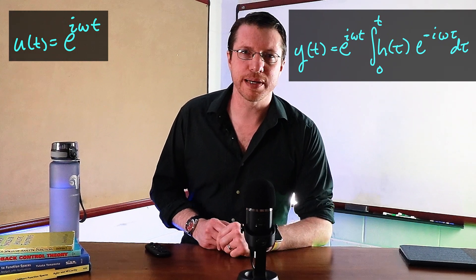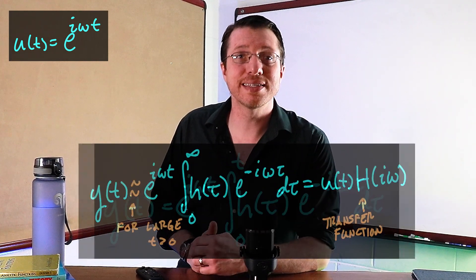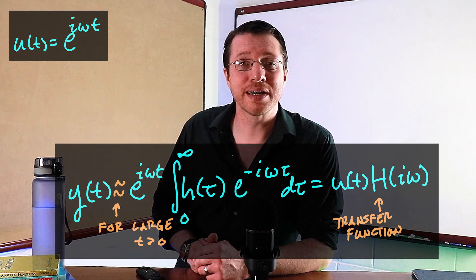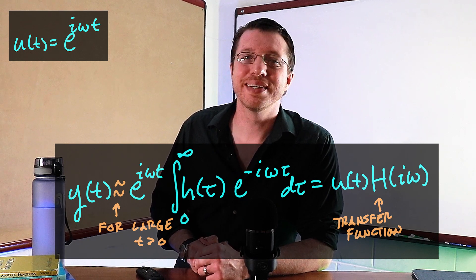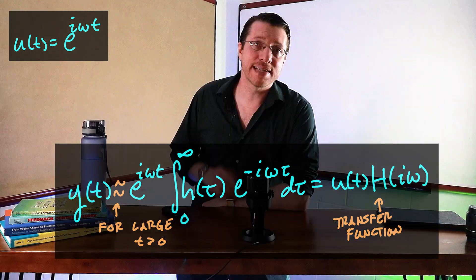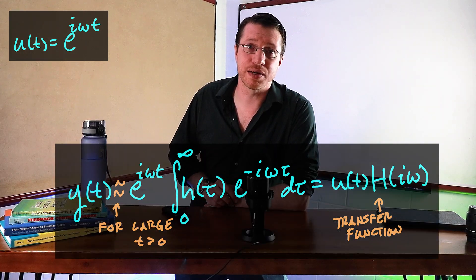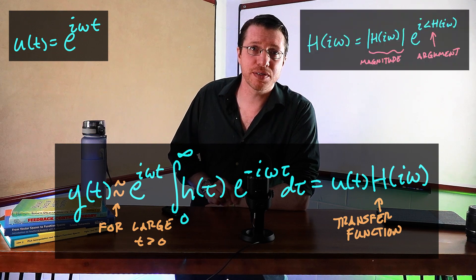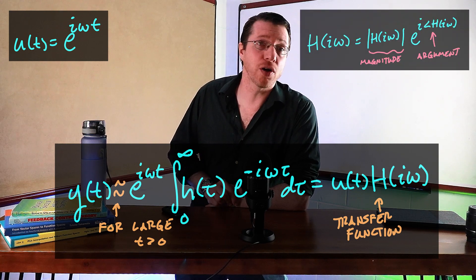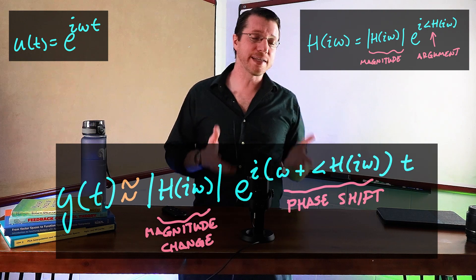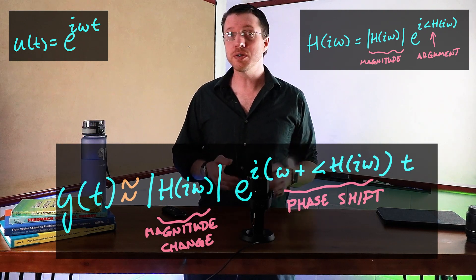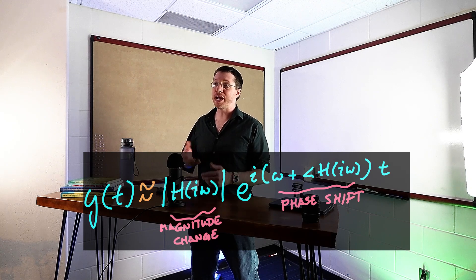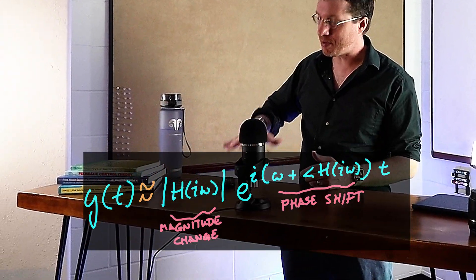If you look closely, as t goes to infinity, this is simply the Laplace transform of our impulse response function evaluated at the square root of minus one times the frequency of the input. Since this is tending towards a complex constant with respect to time, we can then look at that constant and pull out the complex magnitude and argument. The argument then hits our original signal causing a phase shift, and the magnitude multiplies our original signal, either amplifying up or dampening down.